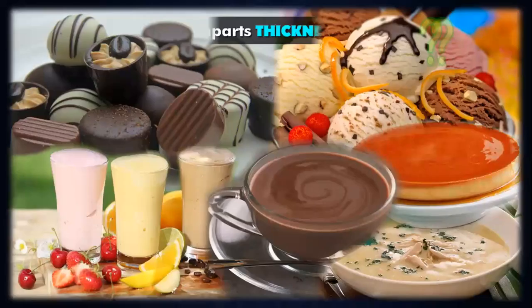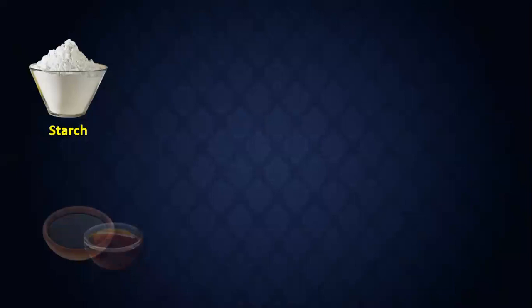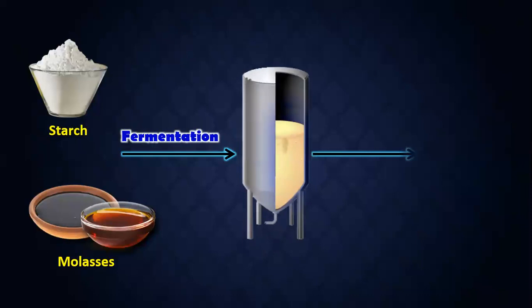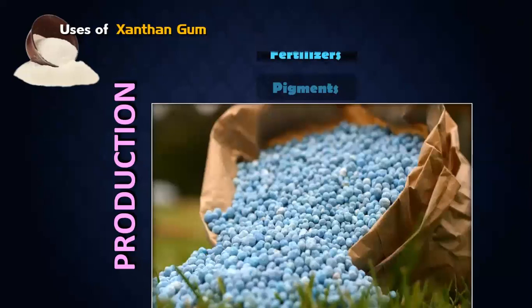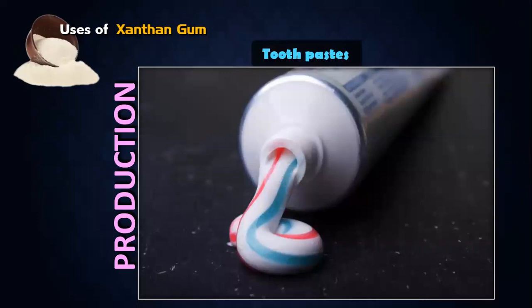Now a small concept of xanthan gum. These products have thick density because of xanthan gum, which is produced with the help of starch and molasses fermented with Xanthomonas species. Xanthan gum is soluble both in hot and cold water and gives high density. It is used for production of pigments, fertilizers, textile pigments, toothpaste, and high quality paper.